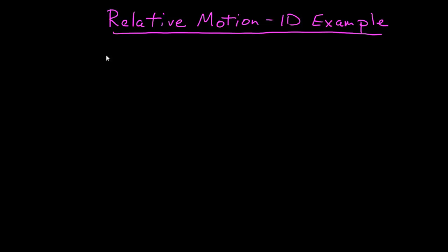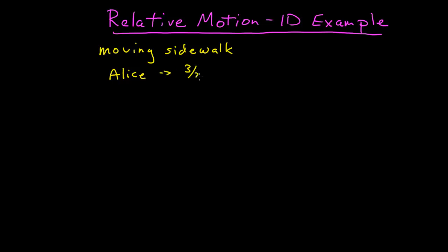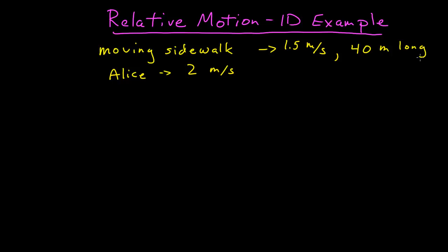In this example, I'd like to do a simple 1D case of relative motion. Let's consider a moving sidewalk, like something you might find at an airport. The moving sidewalk goes at 1.5 meters per second, Alice moves at 2 meters per second, and the moving sidewalk is 40 meters long. We want to find out how long it takes Alice to walk on the sidewalk going with the moving sidewalk and going against the moving sidewalk.